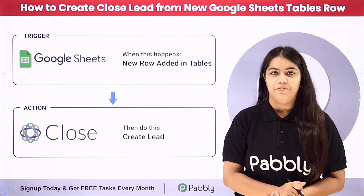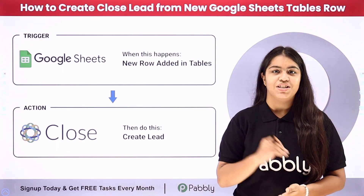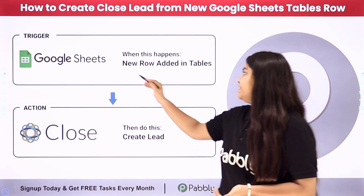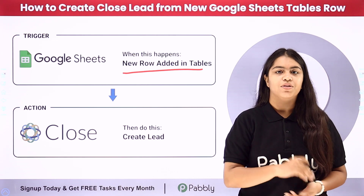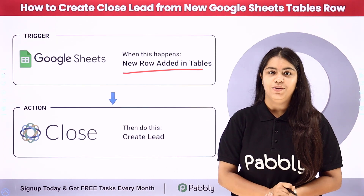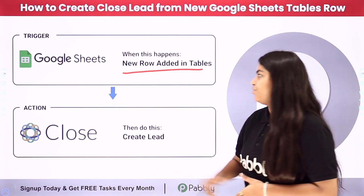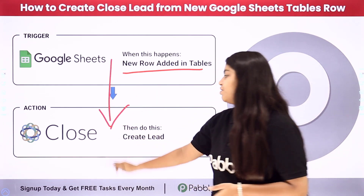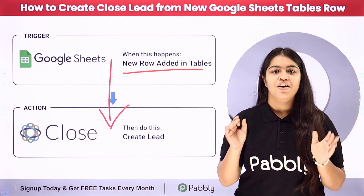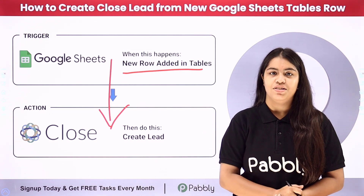I'm running a software solutions company and we track the details of our potential customers in a single spreadsheet table. I want that as soon as I add the details in the table of my Google Sheets, automatically with the help of those same details, a new lead should be created in my Close account too. So for this we are going to create a connection between Google Sheets and Close. To create this connection without knowing any programming or coding language, we are going to use Pabbly Connect — it is an amazing automation software.